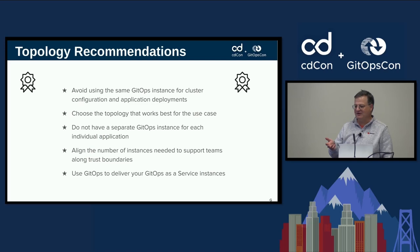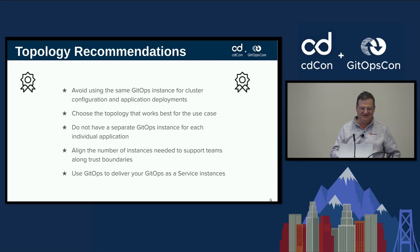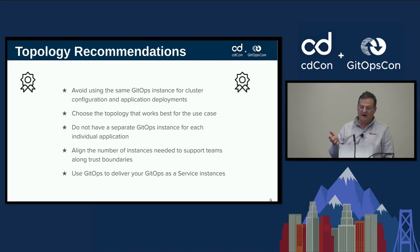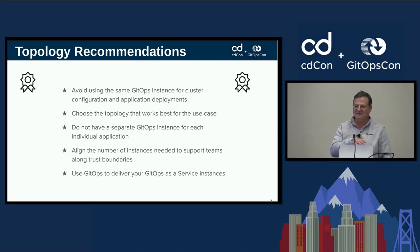Do not have a separate GitOps instance for each and every application — don't go the Jenkins model of handing them out like candy, chewing up resources and requiring more management. Align the number of instances you need along your team trust boundaries. If you have different teams that work well together as part of the same broader organization, that's an opportunity to aggregate them into a single instance. And use GitOps to deliver your GitOps — don't manually provision all these instances. Have a central GitOps, an Argo of Argos, or use tools like OCM to push those out and manage them for you.